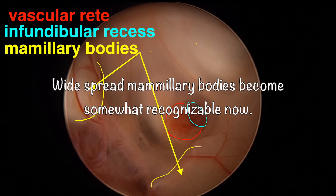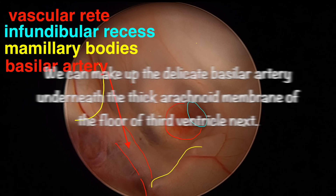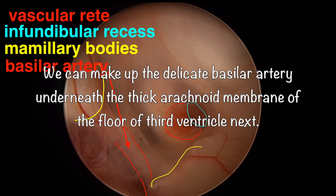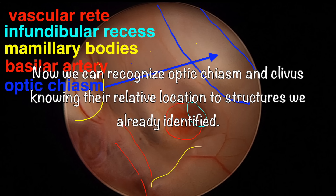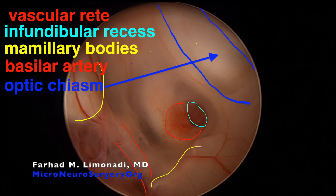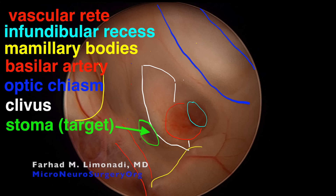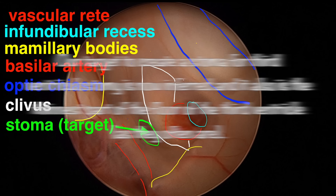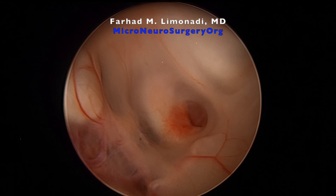The widespread mammillary bodies become somewhat recognizable. We can make out the delicate basilar artery underneath the thick arachnoid membrane of the floor of the third ventricle. We can recognize the optic chiasm and clivus, knowing their relative location to structures already identified. Our target to create a stoma for third ventriculostomy is now inferred — it is also the thinnest part of the floor of the third ventricle.